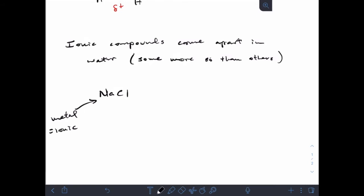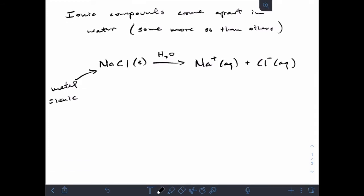If I take some solid sodium chloride and I put it in some water, then I get sodium ions aqueous and chloride ions aqueous. So I've got some Na+ and some Cl- there.